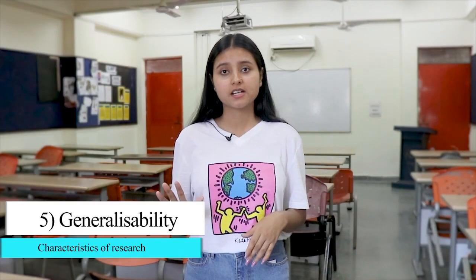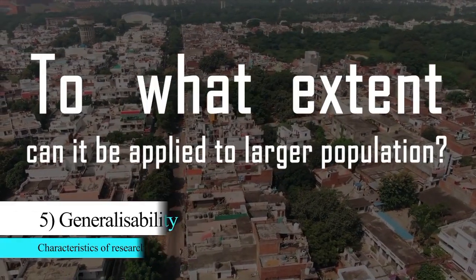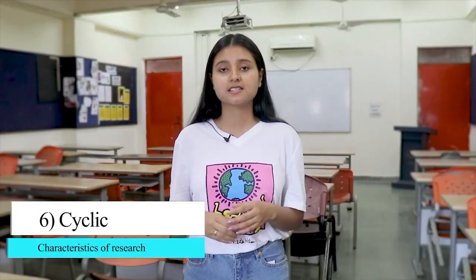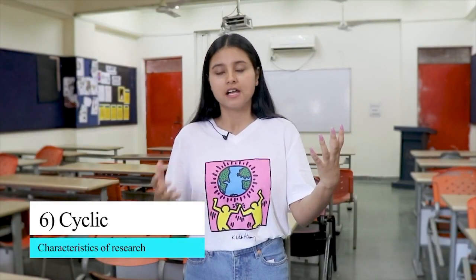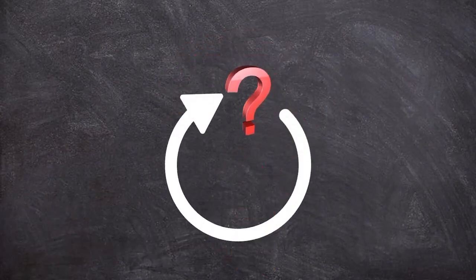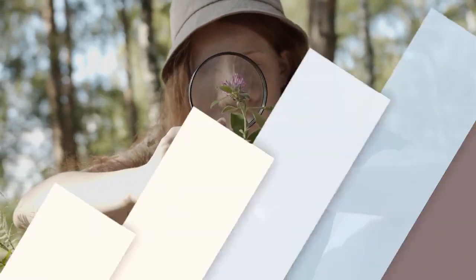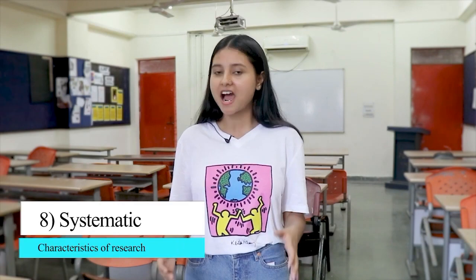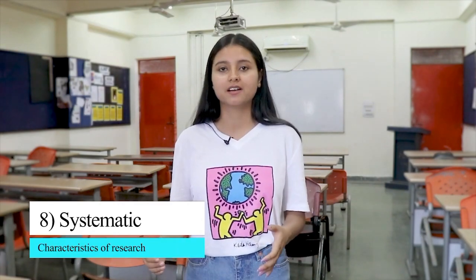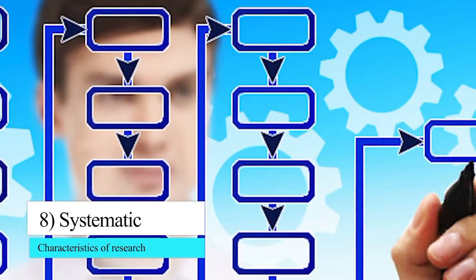The fifth characteristic is generalizability — to what extent your research can be applied to a larger population. Sixth is cyclic: research begins with a question and also ends with a question. Seventh is empirical, meaning it should be based on real life experiences and observations. And last, research should be systematic, meaning you have to follow a procedure where one step follows another.